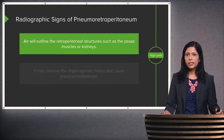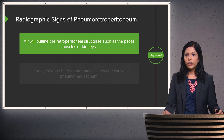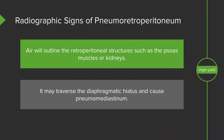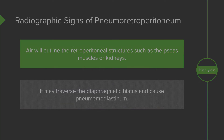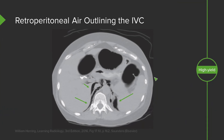Radiographic signs of pneumoretroperitoneum — free air within the retroperitoneal space — include air outlining retroperitoneal structures such as the psoas muscles or kidneys, and it may traverse the diaphragmatic hiatus into the chest causing pneumomediastinum. This example shows retroperitoneal air outlining the IVC and a portion of the aorta. You can see free air surrounding the IVC and retroperitoneally surrounding the aorta, as well as in the left and right upper abdomen.